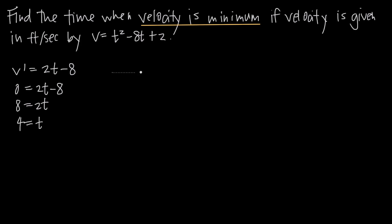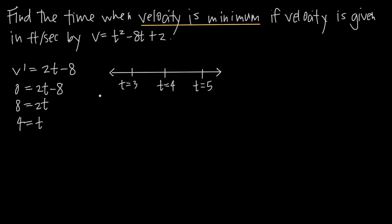To use the first derivative test, we draw a number line and place our potential critical point, t equals 4, in the middle. Then we pick values on either side of t equals 4 to test in the first derivative — values close to the critical point. In this case, we'll pick t equals 3 on the left and t equals 5 on the right.